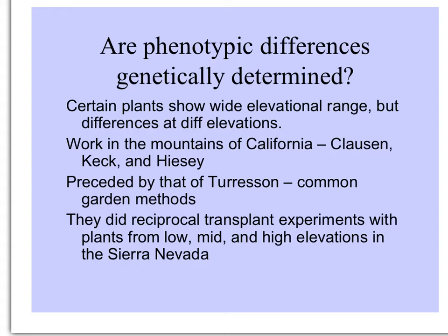Work in the mountains of California was done by a team — a taxonomist, a geneticist, and an ecologist. Before them, the work of Goethes Thurisen involved common garden experiments, bringing plants of different forms that were seemingly the same species to a common garden and seeing if they maintained their differences. This team of Clausen, Keck, and Heise did something innovative called reciprocal transplant experiments, taking pieces of plants from low, mid, and high elevations in the Sierra Nevada and transplanting them to other locations.